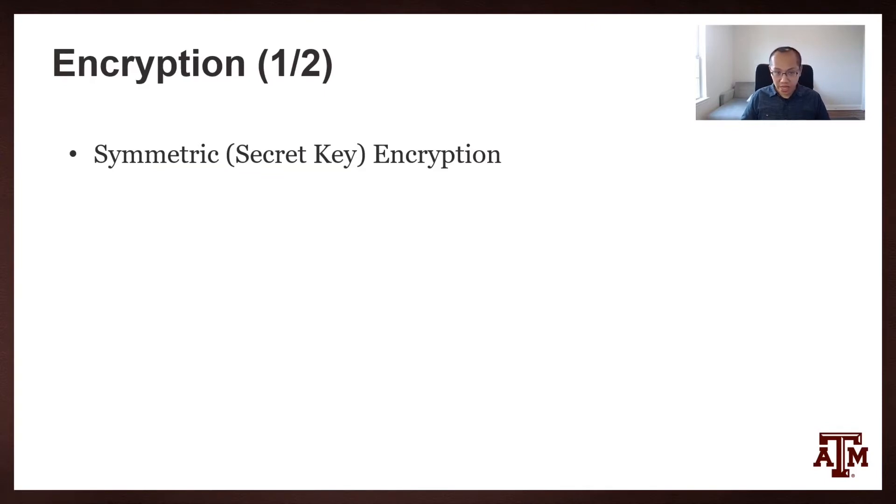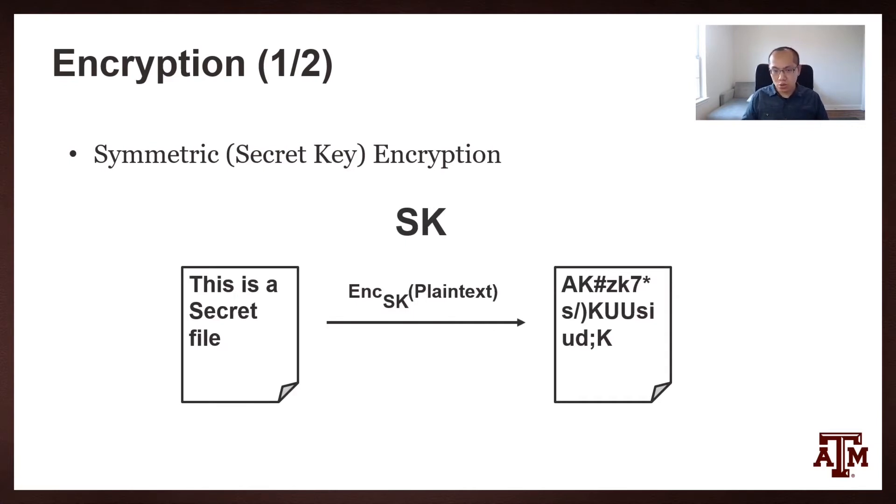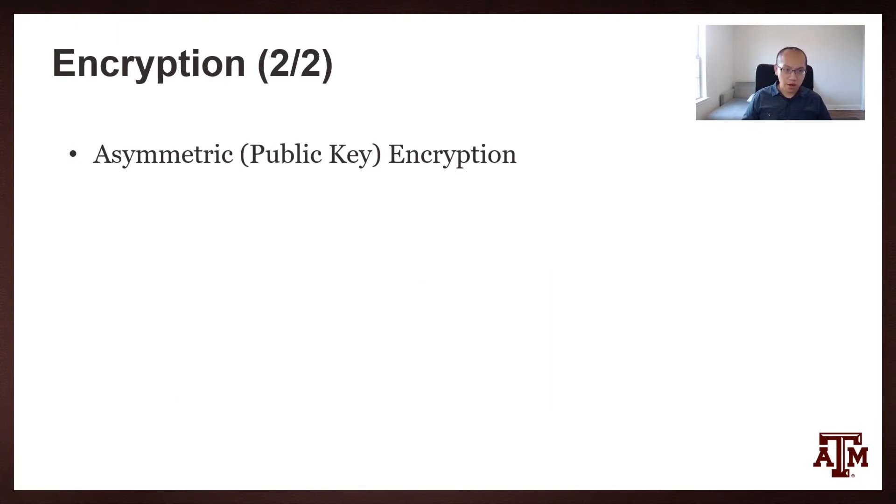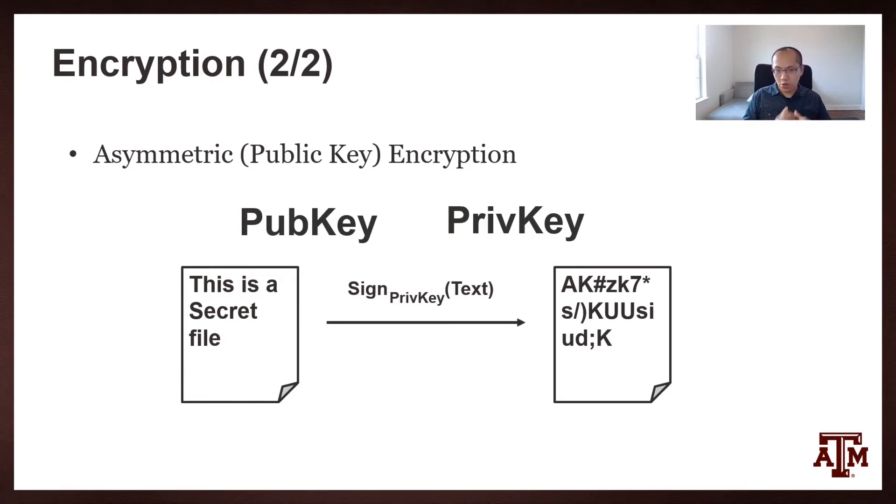Encryption is one of the most critical defense techniques in security. There are two basic forms of encryptions. One is called symmetric encryption or secret key encryption. In this case, you have a single key called secret key. Using this secret key, you can encrypt plain text files into a cipher text. Later, in order to decrypt it back, you can use the same secret key to reverse the cipher text back to the plain text. Another form of encryption is called asymmetric encryption or public key encryption. In this case, you have a key pair: you have a public key and a private key. For example, you can use the public key or private key to sign secret files. In this case, you will generate signatures as the cipher tags. And later, using the other key, for example the public key, you can reverse it back and use it to verify the signature.